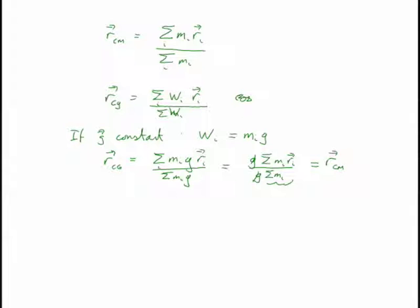If the object is so large that the gravitational field varies over its range, then this no longer applies. For example, if you take the Earth, the gravitational field varies from the core out to the surface. For the Earth, because it's a spherically symmetric body, the two happen to be the same. But if you had something like an asteroid with an irregular shape, its center of mass is not necessarily its center of gravity. You can have a center of gravity not at the same position as the center of mass if you have a varying gravitational field.